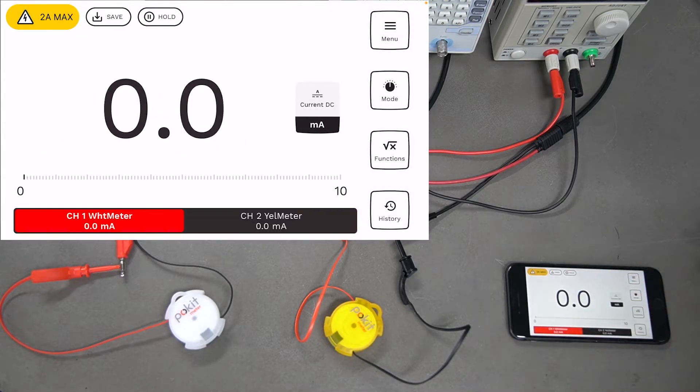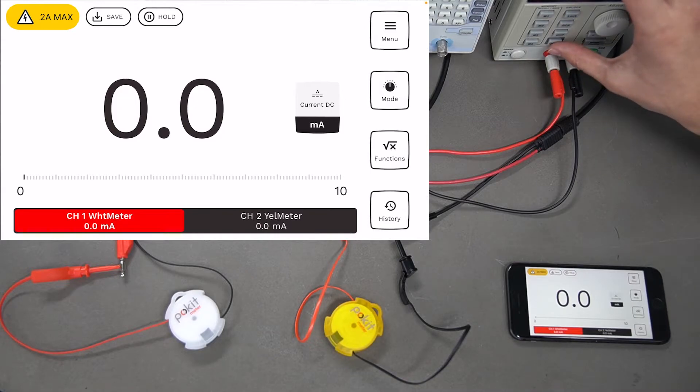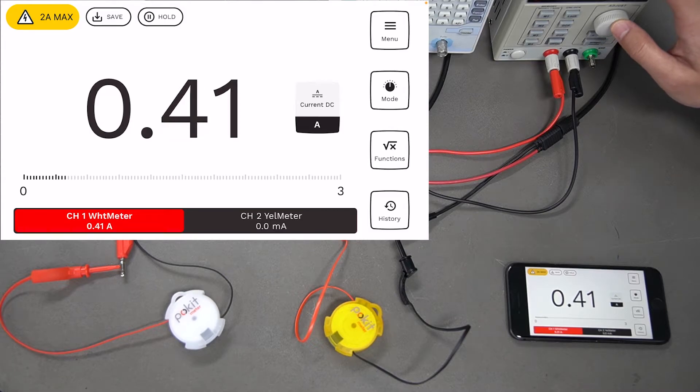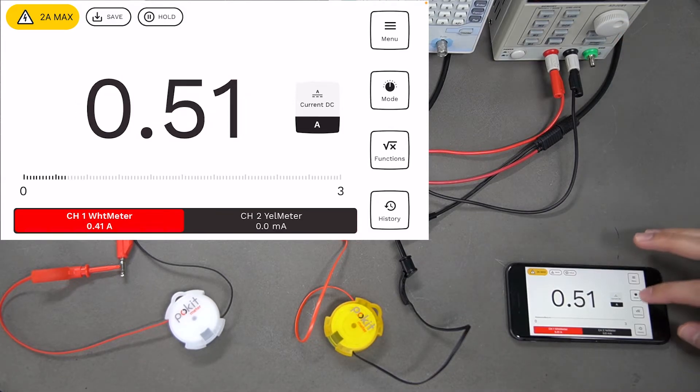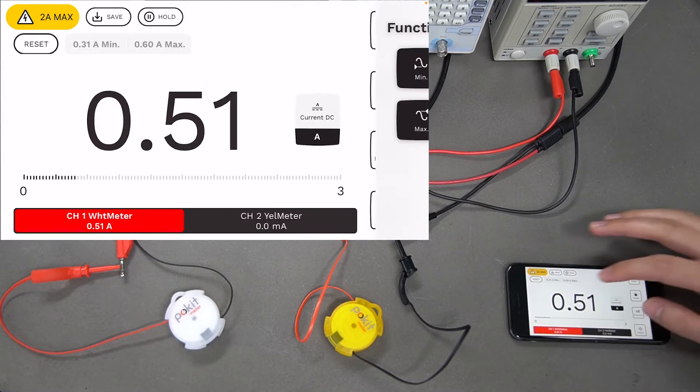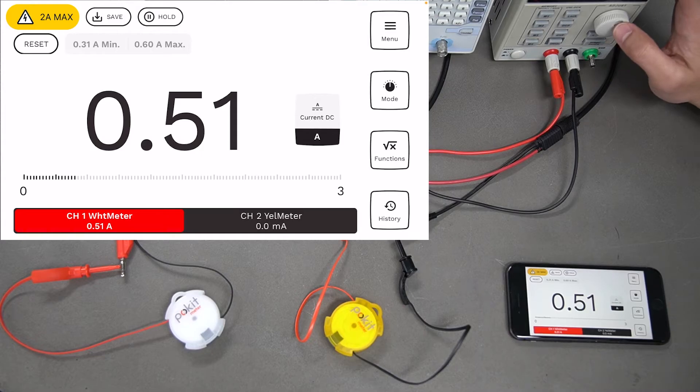Let's go to that white meter again and start feeding some amps through. You can see you've got that reading there and it's changing. We'll turn these functions on, the minimum and maximum ones, so we can see those minimum and maximum values at the top.